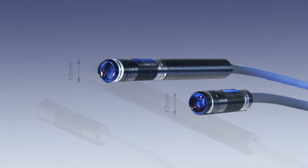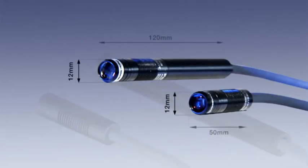The LED heads are only 12 mm in diameter and are available in two sizes, 50 mm and 120 mm. They can thus be installed flexibly for a wide range of purposes and are even suitable for manual manufacturing workplaces.